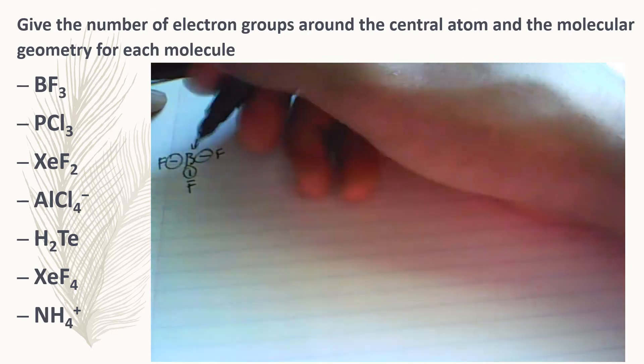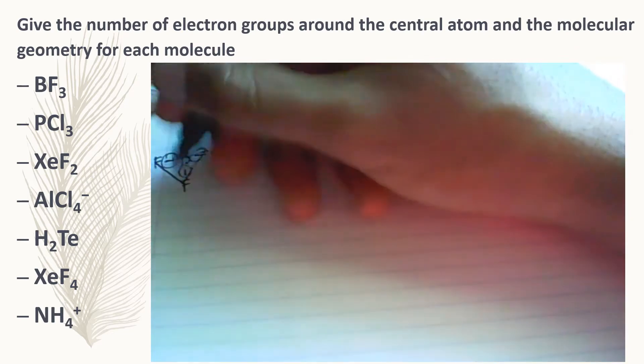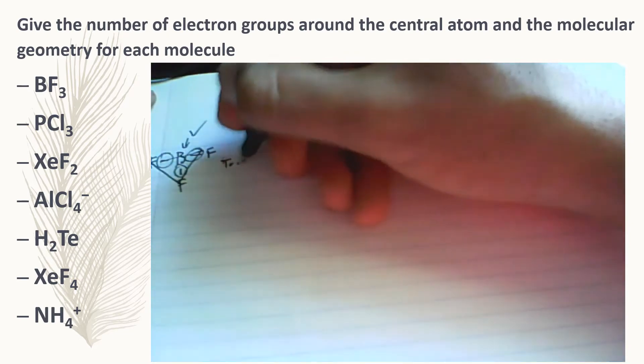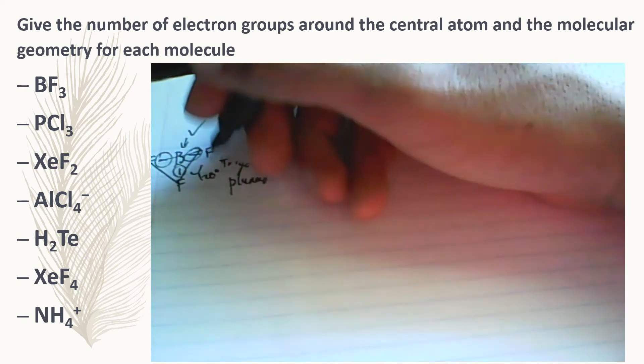I'm going to start drawing the chemicals. Boron trifluoride should look something like this. Boron does not obey the octet rule because it has six electrons in total, but that's okay because boron is one of the exceptions of the octet rule. The molecular shape is going to be trigonal planar because you have a triangle shape in the plane, and the angles are 120 degrees between each of the molecules.